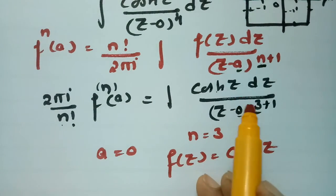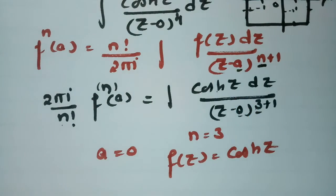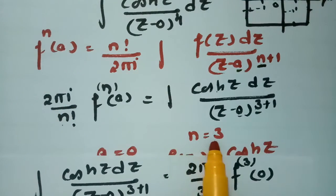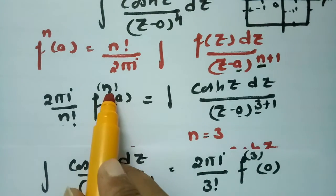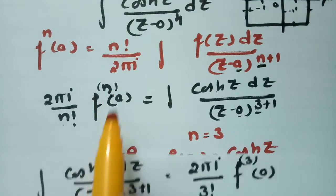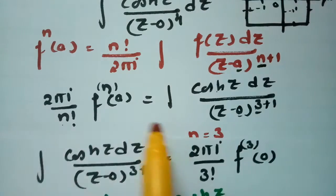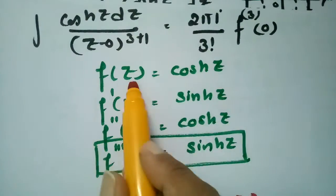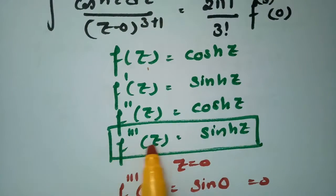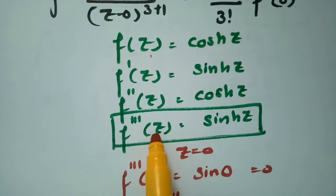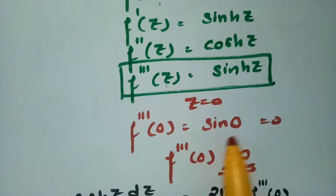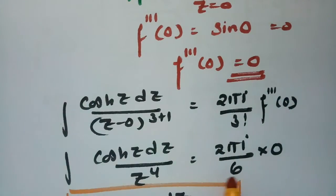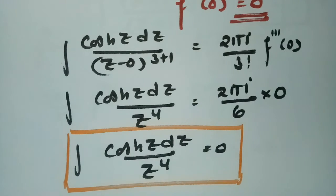The integral equals (2πi / 3!) × f⁽³⁾(0). Since f(z) = cosh(z), the third derivative is sinh(z), and substituting z = 0 gives sinh(0) = 0. Therefore the third derivative at 0 is 0, and 0 times anything is 0, so the final answer is 0.